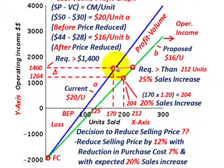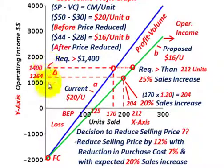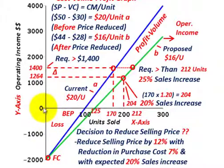Continuing up our blue line for what's currently going on: we're selling 170 units of this product. Going up to our profit line and moving over to operating income, that equates to $1,400 in operating income. We take 170 units times our $20 per unit contribution margin, giving us $3,400. But $2,000 of that goes towards fixed cost, so subtracting $2,000 from $3,400 gives us $1,400 in operating income. So we covered our fixed cost, and $1,400 remains as operating income.